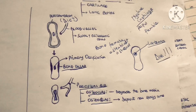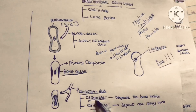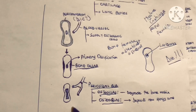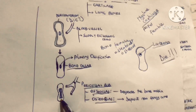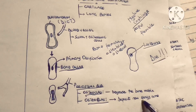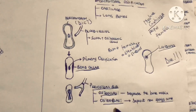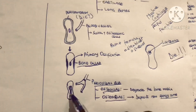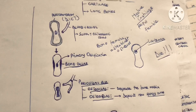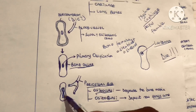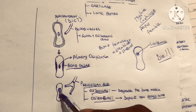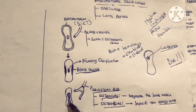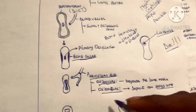The periosteal bud also supplies osteoblasts — the bone-forming cells. When the osteoclasts remove the dead chondrocytes, the osteoblasts deposit new bone tissue, specifically spongy bone. The osteoblasts deposit spongy bone whilst the osteoclasts remove the dead chondrocytes. Through this process the area becomes bony, and where this ossification occurs is called the ossification center.